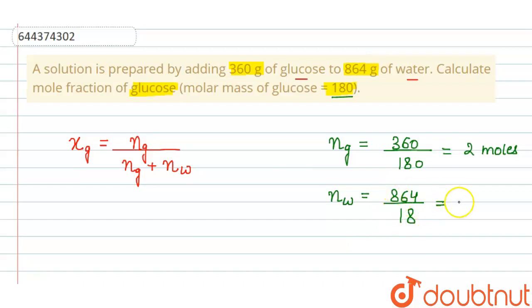If we solve it, we will get 48 moles. So now we will put these values here, so it will be equal to 2 divided by 2 plus 48, so it will be 2 divided by 50.